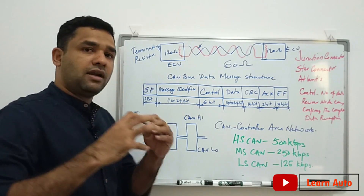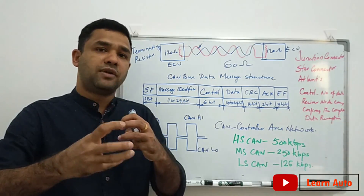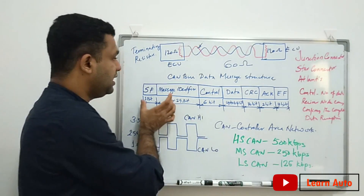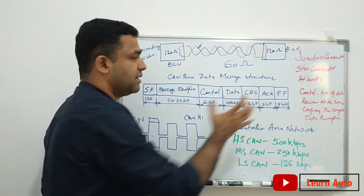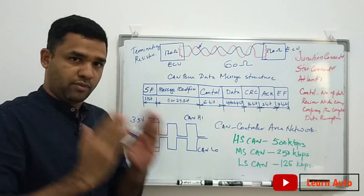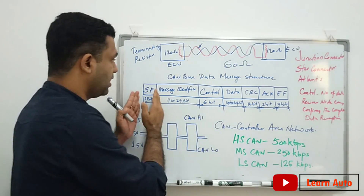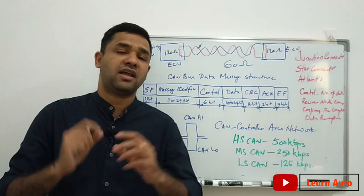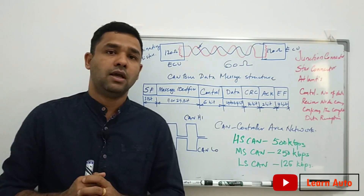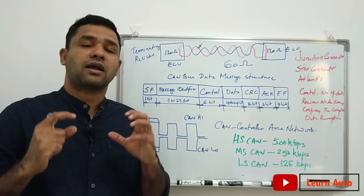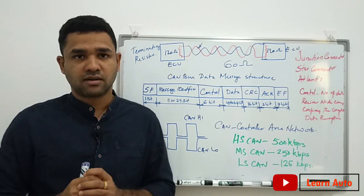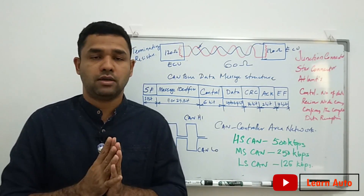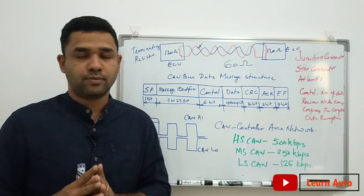This data is transmitted as a message. This is the structure of a CAN message. Every communication system maintains a protocol.